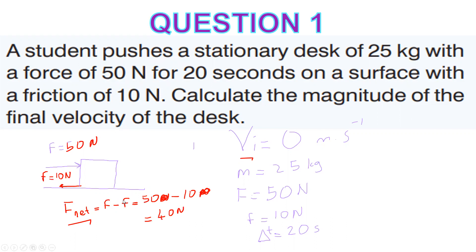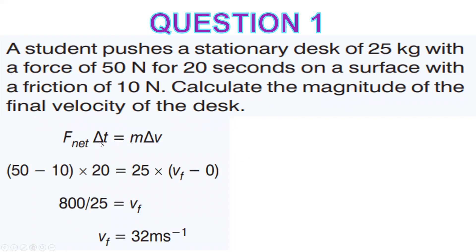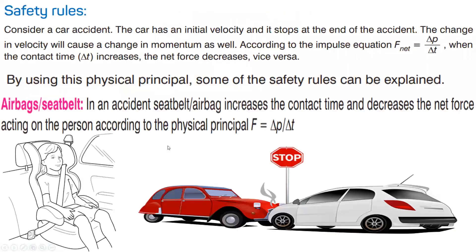The net force acting on the object is 40 N. Using the impulse formula: F net times delta T equals mass times delta V. We substitute: (50 minus 10) times 20 equals 25 times delta V. Delta V equals V final minus V initial, and since V initial is zero, we get 800 divided by 25, which gives 32 meters per second. Question one is done.